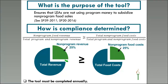You don't have to worry too much about this ratio — I know it's pretty complicated — but the Non-Programmed Food Revenue tool calculates this ratio for you and then lets you know if you're in compliance or if you need to increase your a la carte or non-program prices, or transfer non-federal funds to make up the difference.